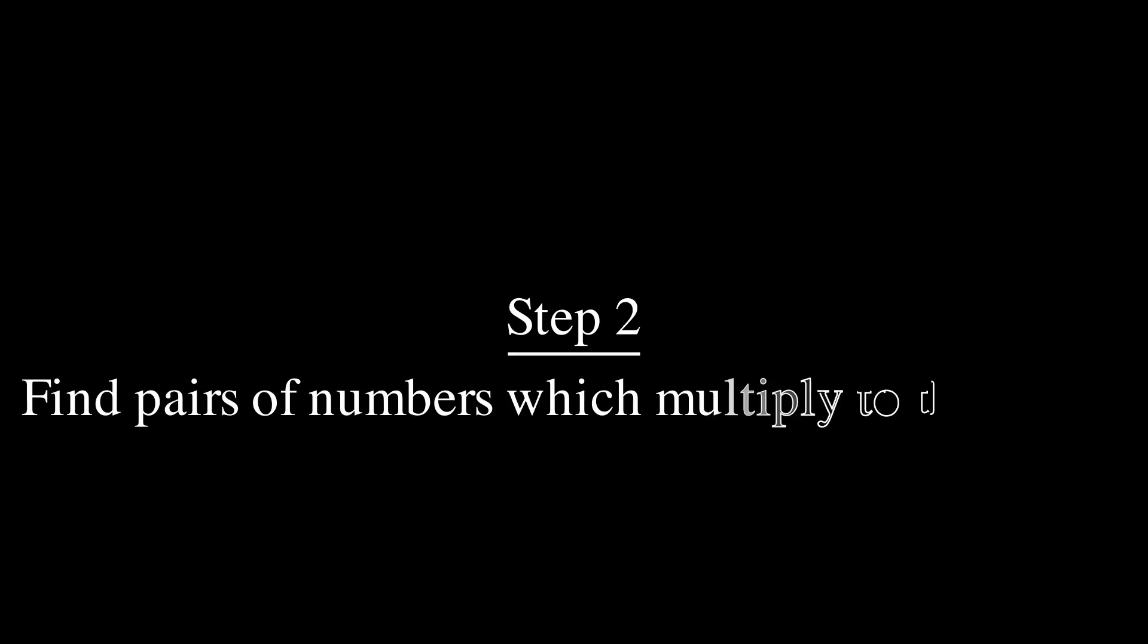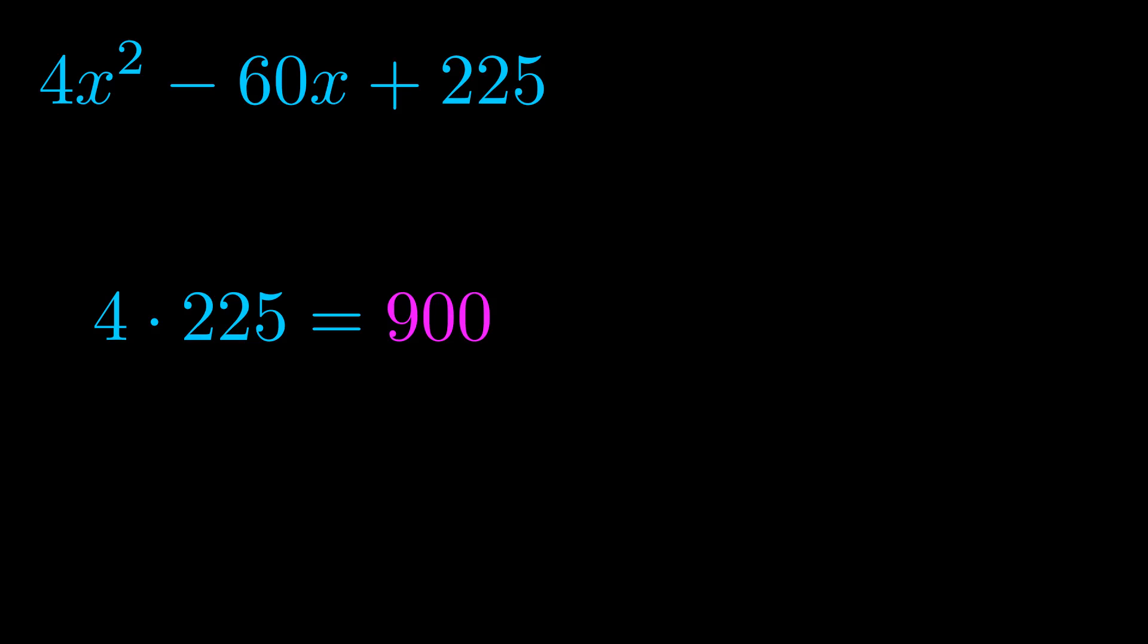Step two is to try to find all of the pairs which multiply to this number. Now turns out you don't really need to find all of them, but go ahead and write down as many numbers as you can that multiply to the magenta value for now. Pause the video and resume when you're ready to continue.